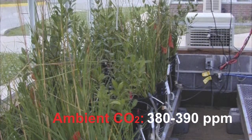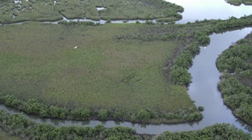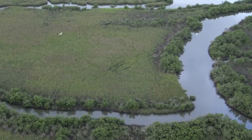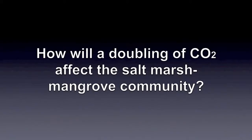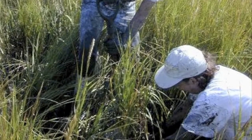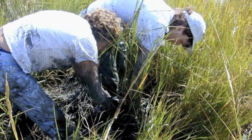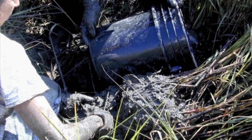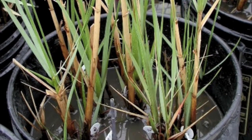Whether and when we might reach that higher concentration is unknown and dependent on a number of factors. However, it's still important to know what might happen if CO2 continues to increase. Scientists collect segments of marsh, which are established in containers called mesocosms, and transport them to the CO2 facility. The mesocosms are then randomly assigned to different experimental treatments designed to test the response of plants to hypothetical conditions.